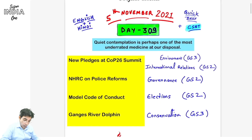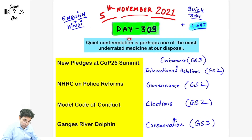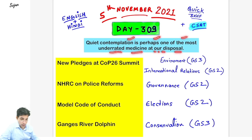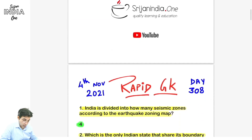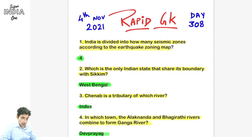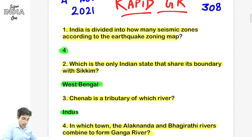Hi, quiet contemplation is perhaps one of the most underrated medicine at our disposal. Today is 5th of November 2021. Let us have a quick discussion of all these important topics. Rapid GK yesterday questions ke answers.